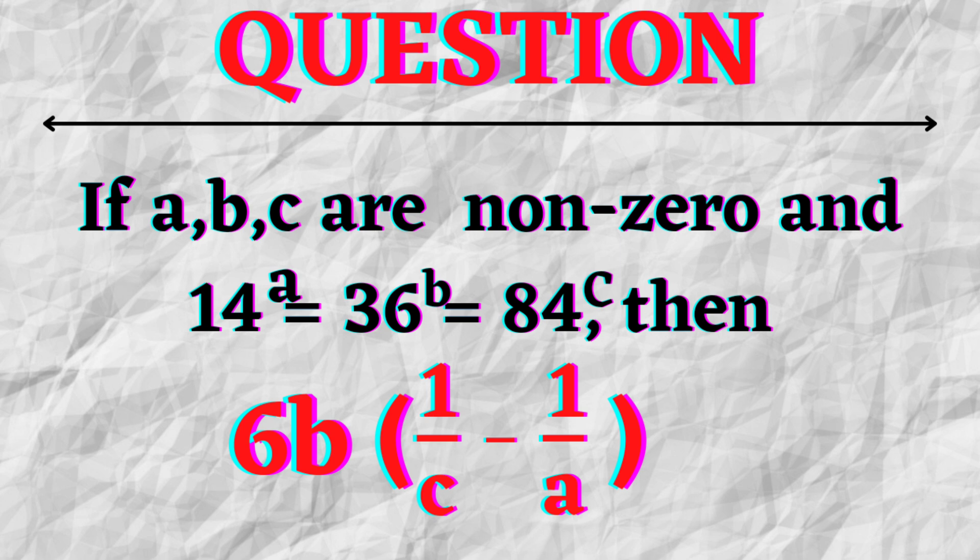Now the problem states that if A, B, C are non-zero and 14 raised to power A is equal to 36 raised to power B is equal to 84 raised to power C, then 6B into 1 by C minus 1 by A is equal to. So basically we are given some information and have to find out the value of 6B into 1 by C minus 1 by A.